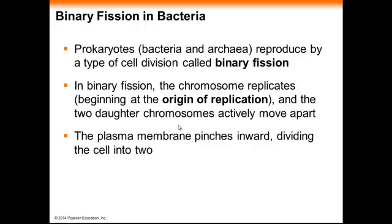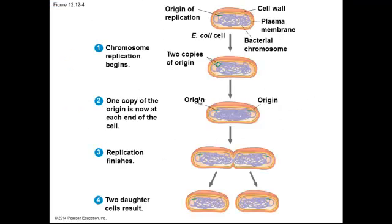Single-celled prokaryotes go through a much simpler process called binary fission, which essentially consists of two steps: the chromosome replicates and the cell divides into two. Here's a bacterial cell — it duplicates its chromosome, the copied chromosomes begin to move apart, the cell begins to divide, and you get two daughter cells. It's fairly simple.